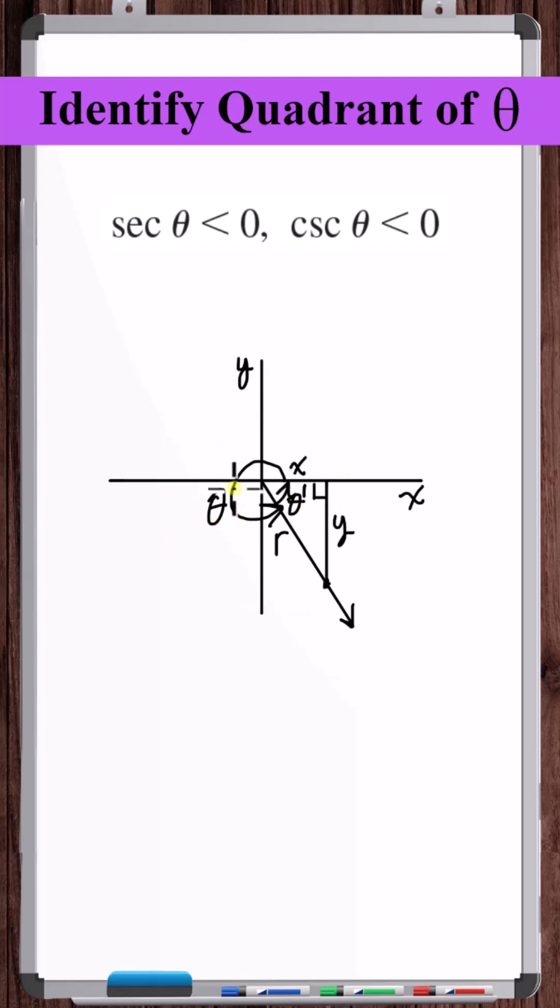For any angle in any quadrant, secant is r over x. Since r is always positive, we can see that secant will be negative in quadrants 2 or 3.